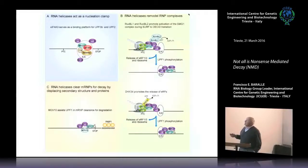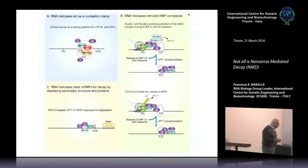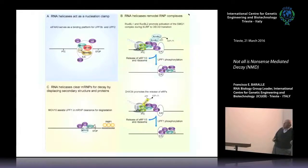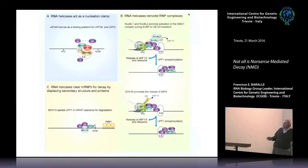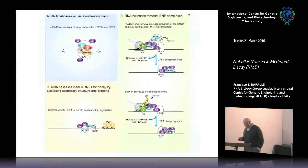The helicase is not only UPF1. There are several other factors, like elongation factor eIF4A3, that acts as a helicase as well within the exon junction complex and acts as a nucleation clamp for all the other proteins. So we have the initiation of decay, displacing other proteins and structures, and the remodeling and release of factors — all steps I'm not going to go into in detail.